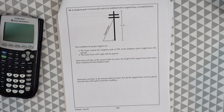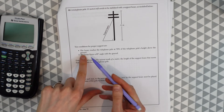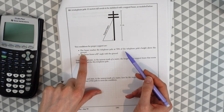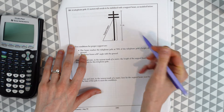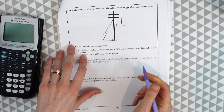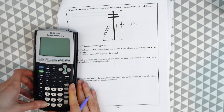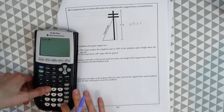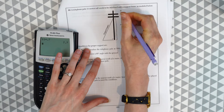Question 33: A telephone pole 11 meters tall needs to be stabilized with a support beam, as modeled below. Two conditions for proper support are: one, the beam reaches the telephone pole at 70% of the telephone pole's height above the ground, and two, the beam forms a 65-degree angle with the ground. The height is 70% of 11 meters, so 11 times 0.7 gives us 7.7 meters.